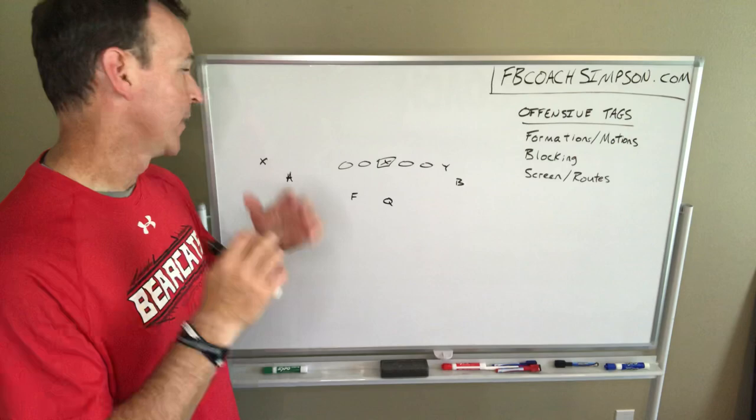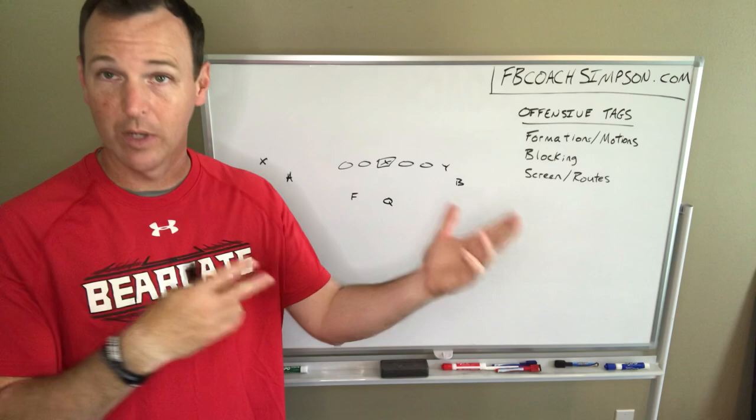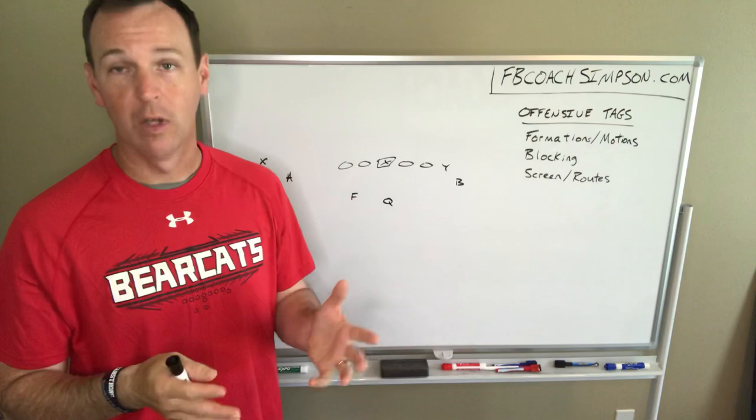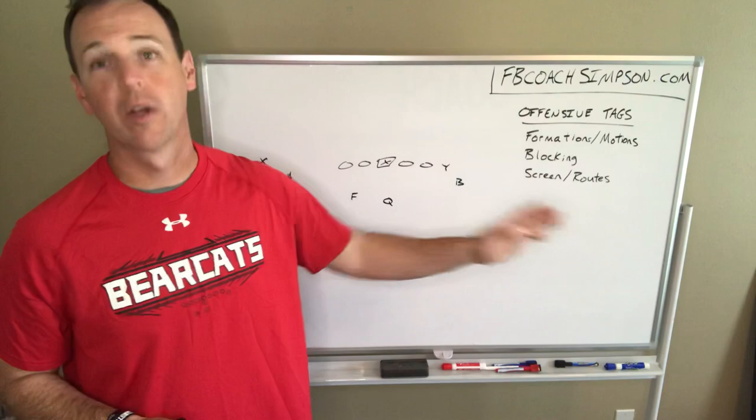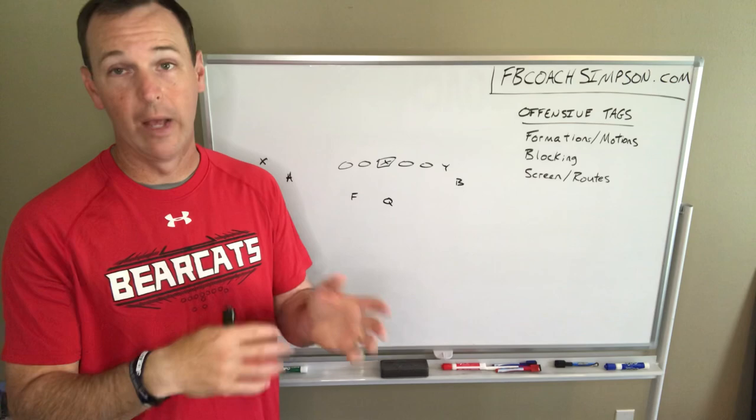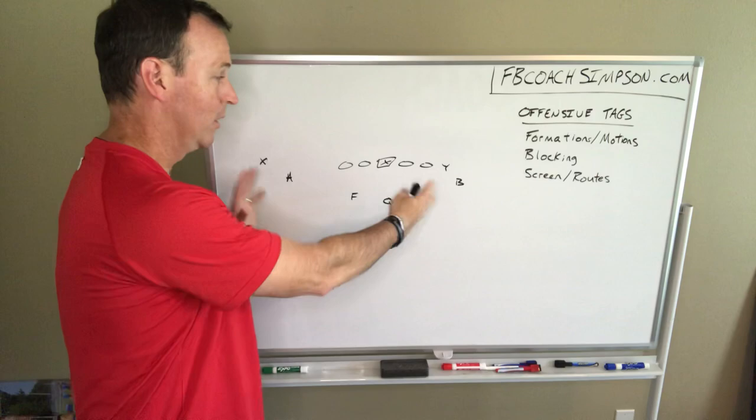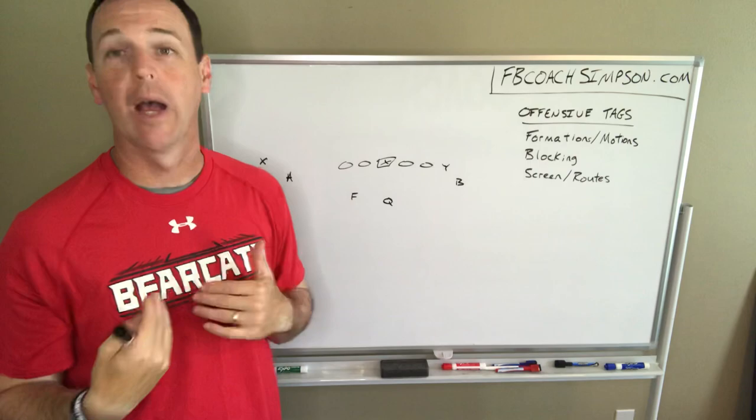Our F knows by the call to go left — he has a home position. If he hears red, he goes left. Our X and A in a more traditional look, if you're a spread guy, that's kind of their home — they go to the left on the numbers. Now red is our right and blue is our left, so if we call blue, everything is mirrored. Everybody goes to their home position but on the other side — our Y and B go left, our X and A go right.